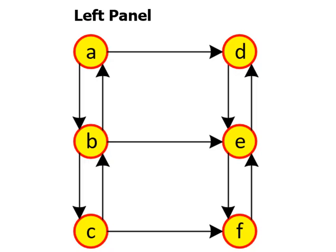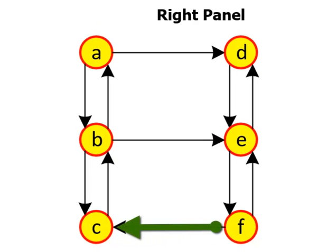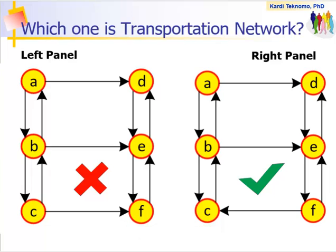You can correct this problem, for example, by changing the direction on one of the links, C-F, to become F-C. The right network is a transportation network because from any node, you can go to any other node and still can go back home to the same node.